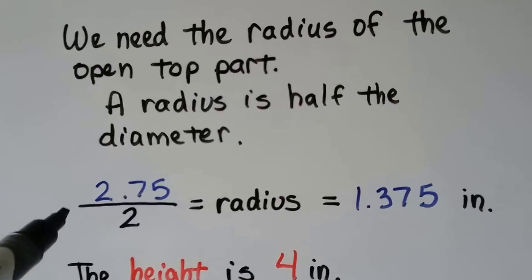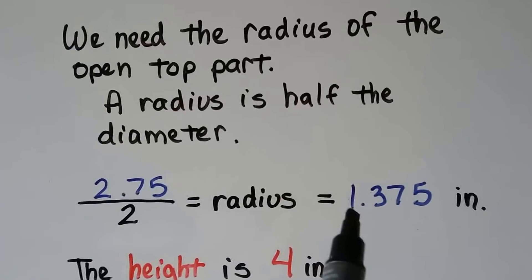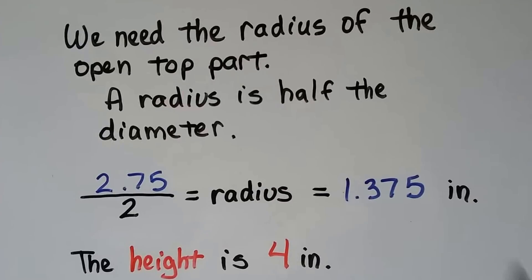So let's do 2.75 divided by 2. Remember, fractions are little division problems. That's going to give us a radius of 1.375 inches.